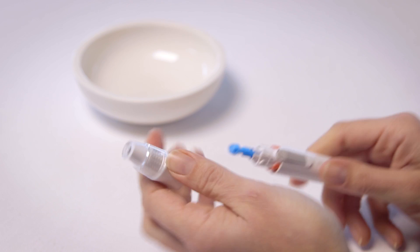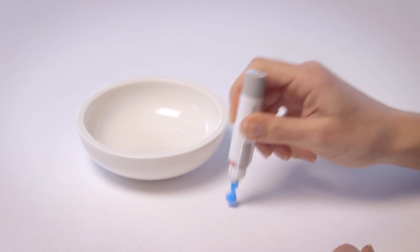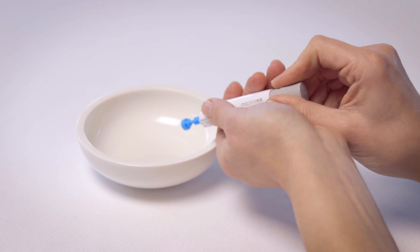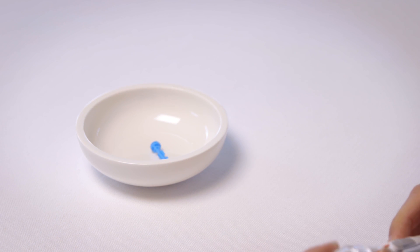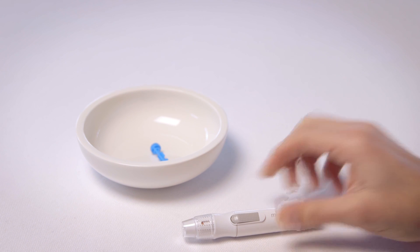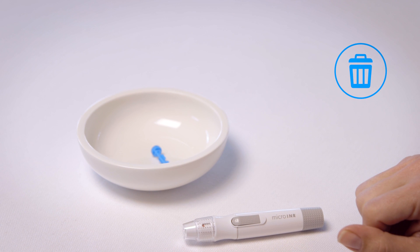Remove the cap from lancing device and stick the lancet into the safety cap of the lancet. Press the release button and pull plunger at the same time. The lancet ejects safely. The chip and lancet can be disposed of in your regular household waste.